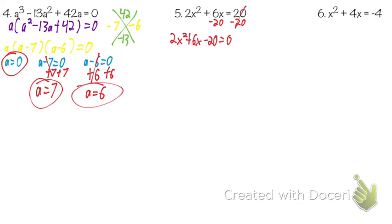Is there a GCF? Two. And we're going to be left with x squared plus 3x minus 10 equals zero. Now, inside the parentheses, can we use the shortcut when we make our X? What goes at the top? Negative 10. What goes at the bottom? 3.